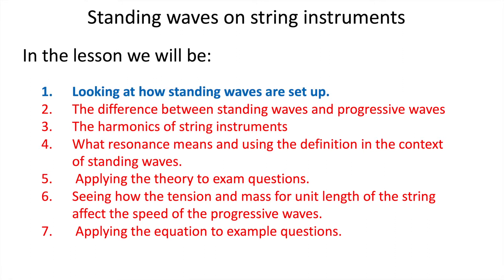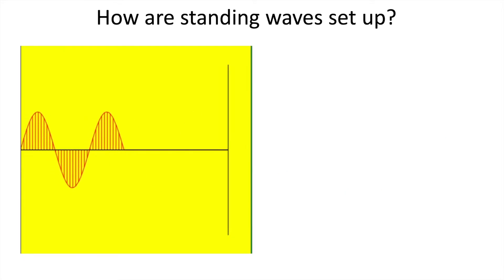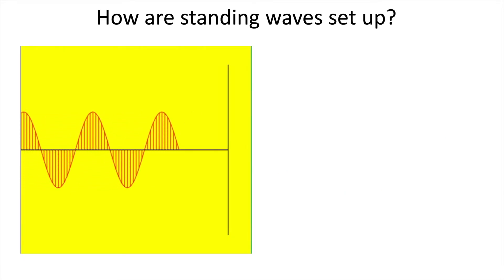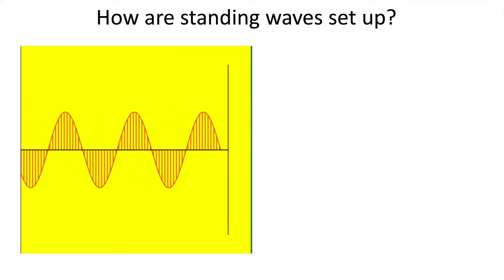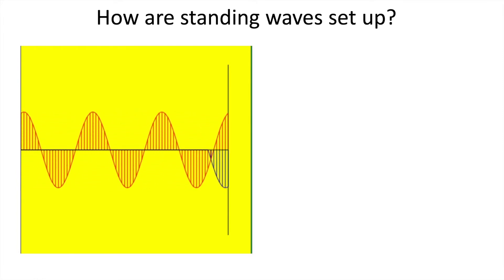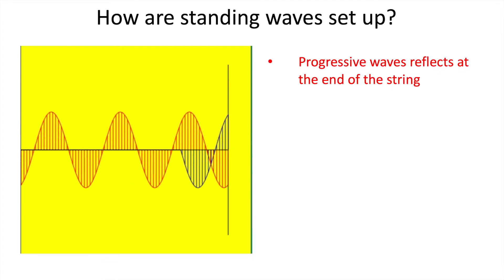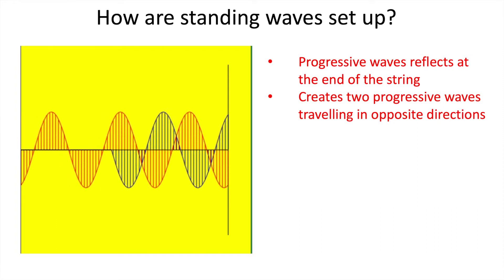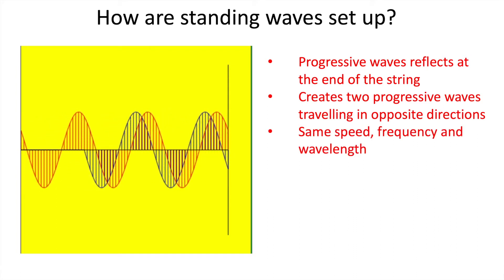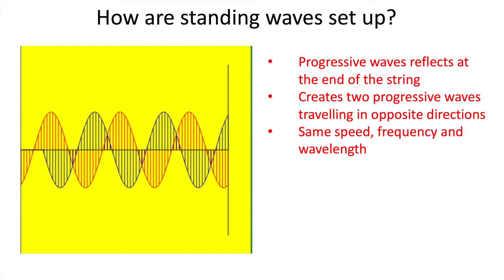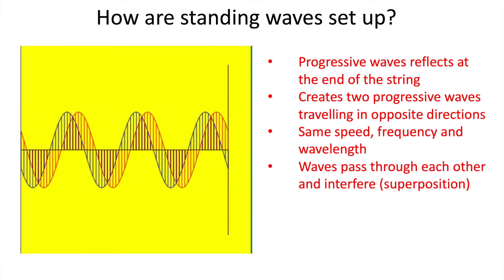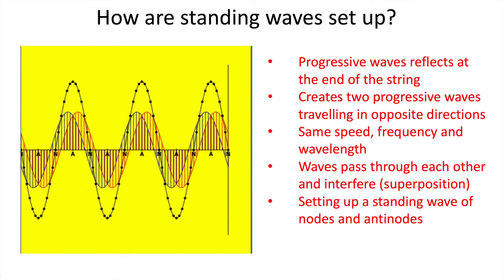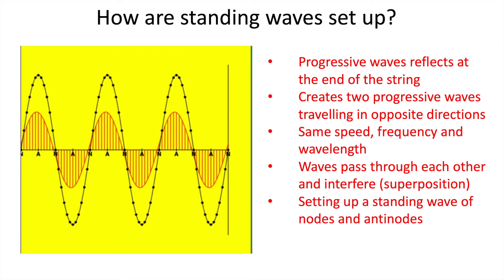Let's have a look at how standing waves are set up. When you pluck a string or cause it to vibrate, you get a progressive wave travelling down the string. At the fixed end, it reflects with a phase change of 180 degrees. This creates two progressive waves travelling in opposite directions, with the same speed, frequency, and wavelength. As the waves pass through each other, they interfere by superposition, producing a standing wave of nodes and antinodes.